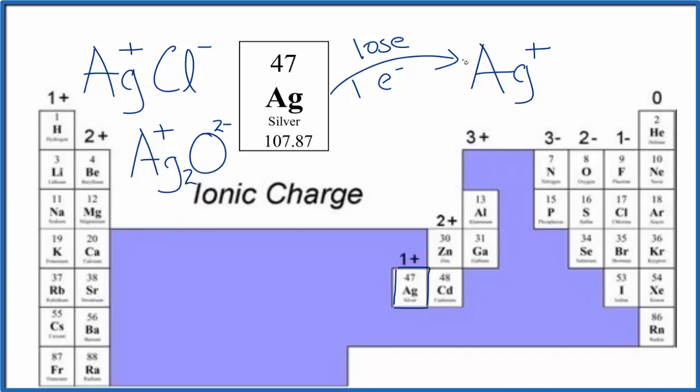So silver will lose electrons to become the silver ion, and it'll usually lose them to other elements like chlorine or oxygen. So to recap, we have neutral silver on the periodic table. It loses an electron and becomes Ag+, the silver ion.